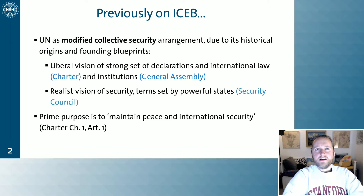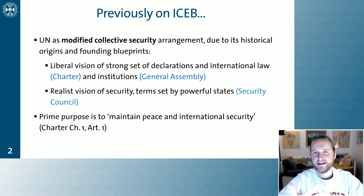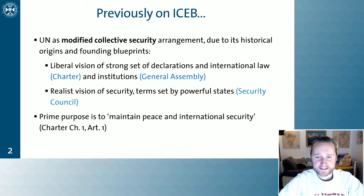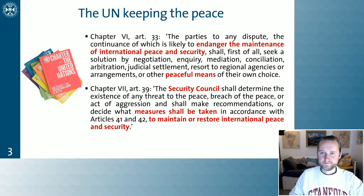We learned in the previous lecture that while the UN was built on the idea of collective security, what really came out of that process was a modified collective security arrangement — it's not a pure collective security institution. The Charter and the General Assembly are very much led by a liberal vision: the Charter with its insistence on international law and rules valid for everyone, and the General Assembly with its idea of one state, one vote. But the Security Council constitutes the realist part of the UN, where powerful states still determine much of the agenda through their veto power. The founding principle of the UN, outlined in Chapter One, Article One, is to maintain peace and security.